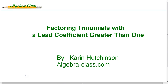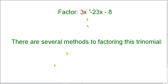In this lesson, we will factor trinomials that have a lead coefficient greater than 1. This trinomial, 3x squared minus 23x minus 8, has a lead coefficient greater than 1. 3 is the lead coefficient.